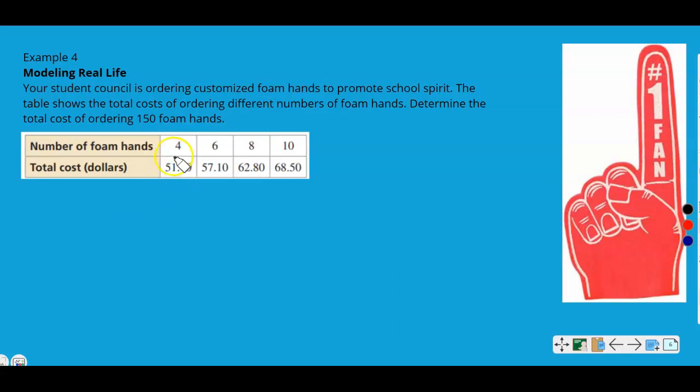So you can see that we're given a table for 4, 6, 8, 10. That's the number of foam hands we're given and the total cost for that number of however many foam hands that were placed. So for four foam hands, they are $51.40, six foam hands, $57.10 and so on.